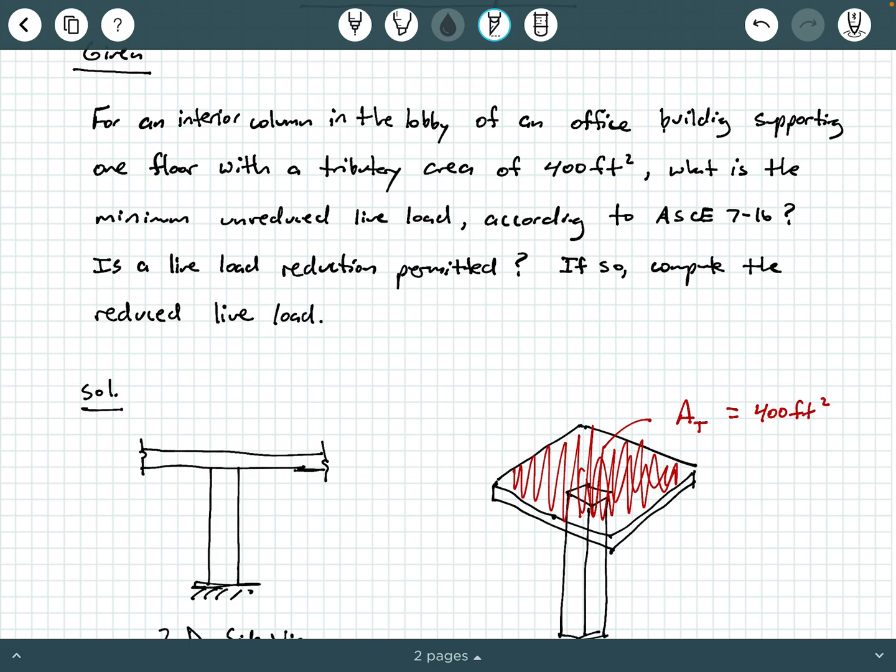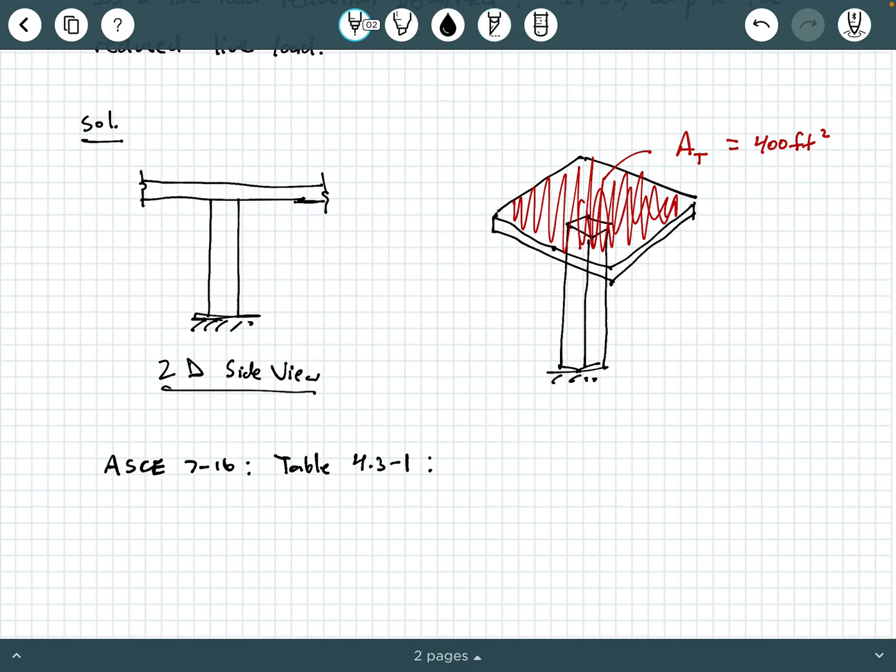Now, if we look at that second column in ASCE 7-16, it says Uniform L-naught in PSF, and then in parentheses, it's got the metric equivalent. So for us, L-naught would be what? Well, according to that table, that's 100 PSF, pounds per square foot.